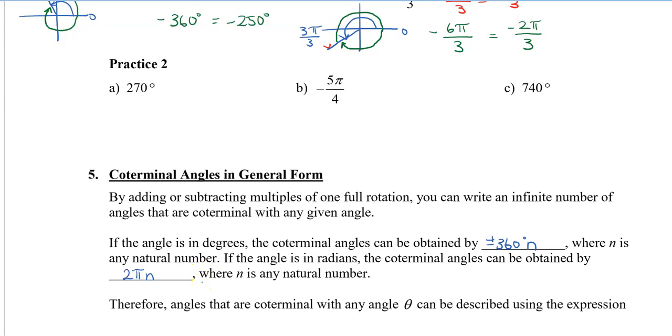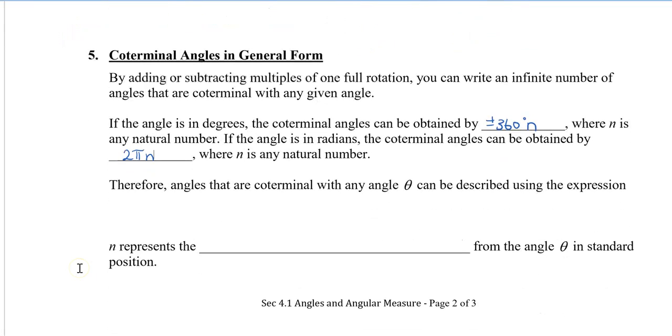So therefore, angles that are coterminal with any angle θ can be described using the expression θ plus or minus 360 degrees n, or θ plus or minus 2π n, if we're in radians. And remember that n represents the number of full rotations from the angle θ, which is in the standard position already.